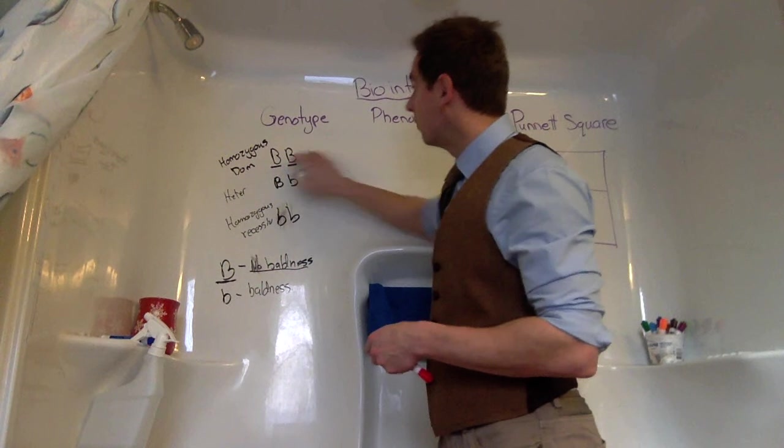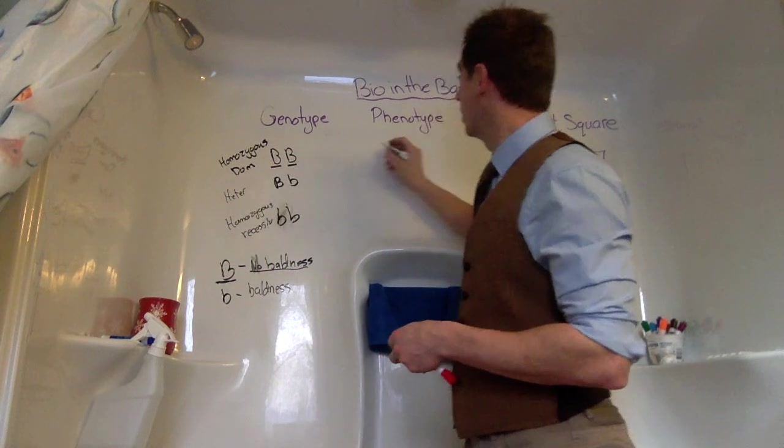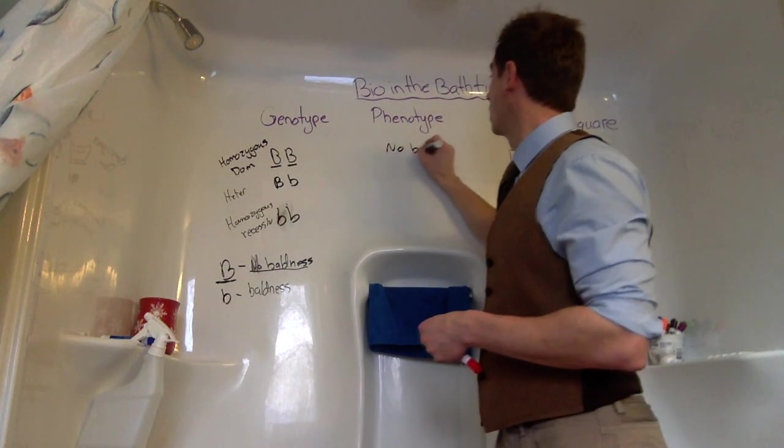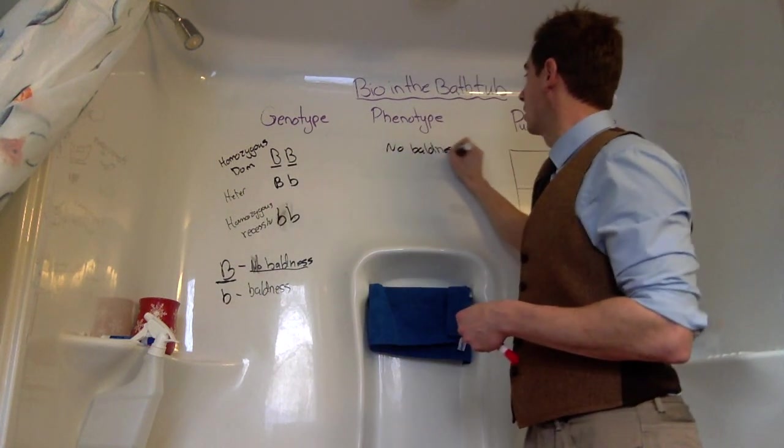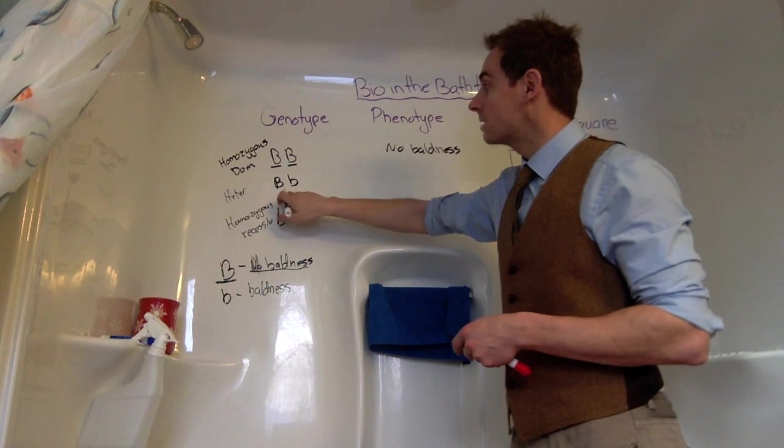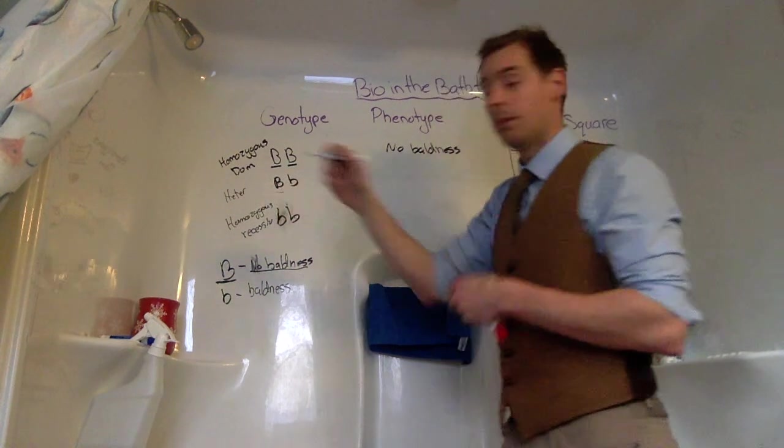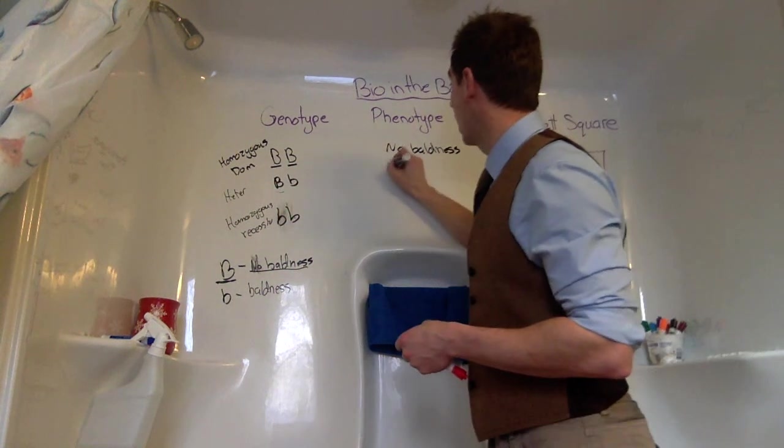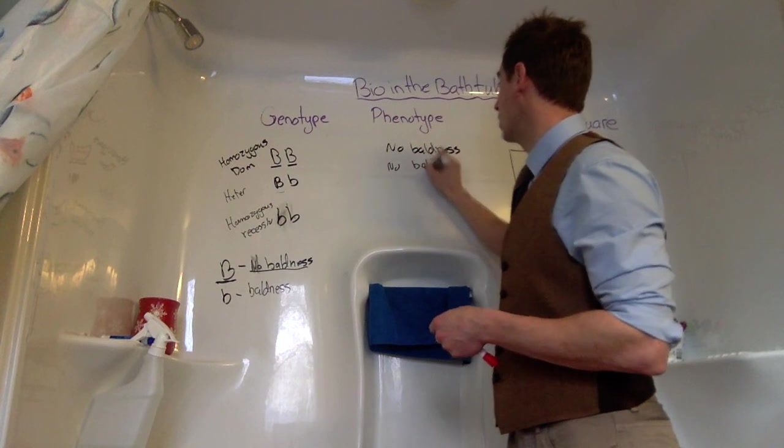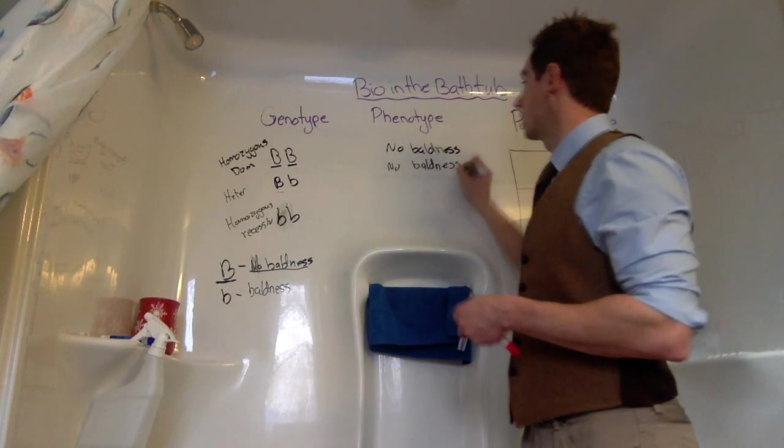So genotype BB, if we have two dominant traits, means we have no baldness. We have a heterozygous mix here, but we still have that dominant trait, which means we have no baldness because we're dealing with complete dominance.